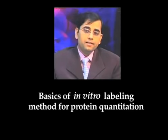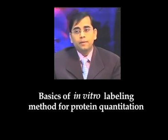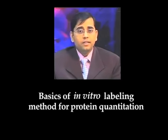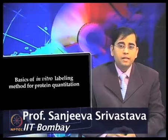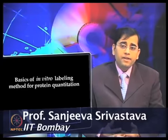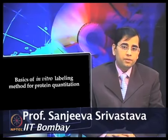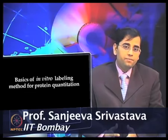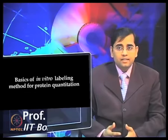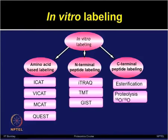The in vitro labeling methods rely on use of labeling reactions at a specific site in proteins or peptides based on various labeling chemistry. Different types of strategies have been developed to introduce isotopes at either the protein or peptide level. In vitro labeling can be three different types: amino acid-based labeling, N-terminal peptide labeling, and C-terminal peptide labeling.